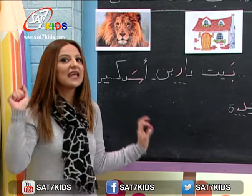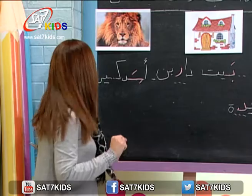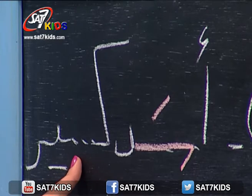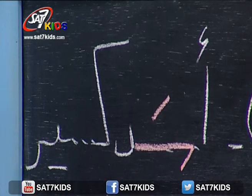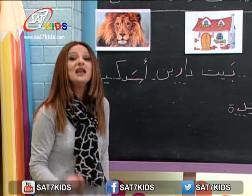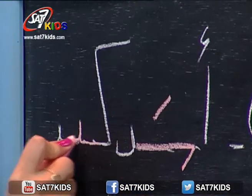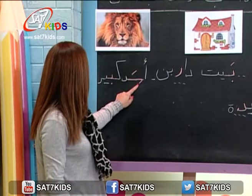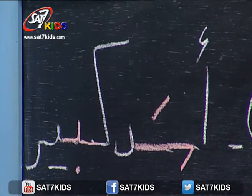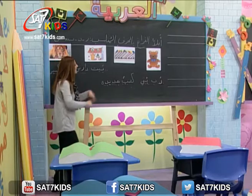وهيك كتبت أسد. كيف شكله هيدا الأسد؟ كبير! في عندي كلمة كبير، ناقص الحرف الثاني. شو هو؟ منسمع كبير، أي حرف؟ صح، حرف الباء. هون عندي حرف الباء بواسط الكلمة، في قبله حرف عاطي إيده وبعده حرف عاطي إيده، يعني لازم أكتب حرف الباء متصل من جهتين.